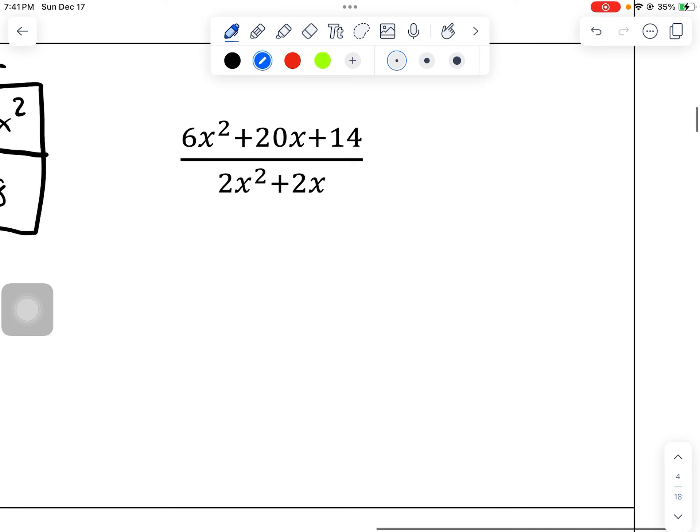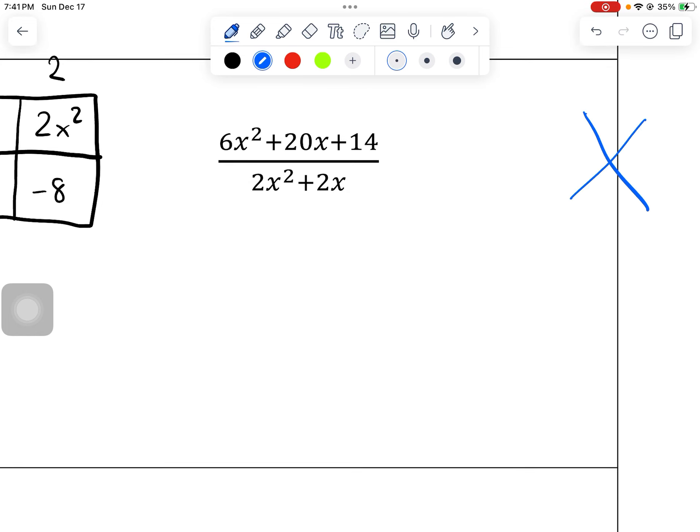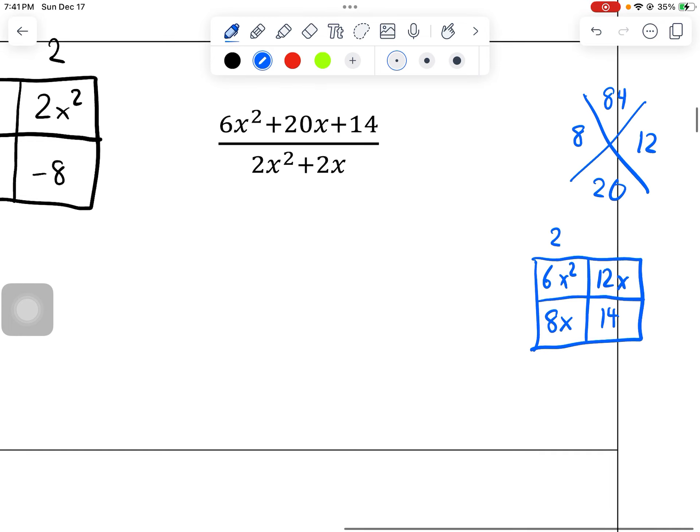Let's do one more of those. So this one's going to require the cross section. 6 times 14 is 84, and then 20. I think I did that one right. So factors of 84 that add to make 20 are 8 and 12. Because 8 times 12 is 84, 8 plus 12 gives us 20. Then I can do the box method here. 6x squared, 14, 8x, 12x. Then I would get 2x here, you get a 2, 6x, and a 2.